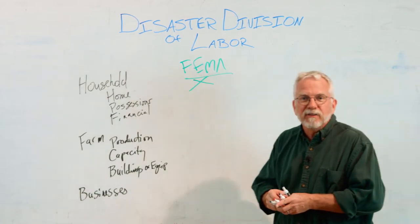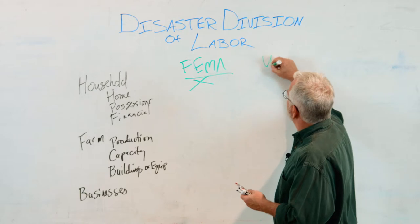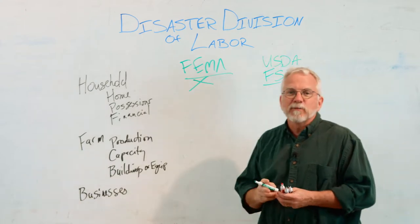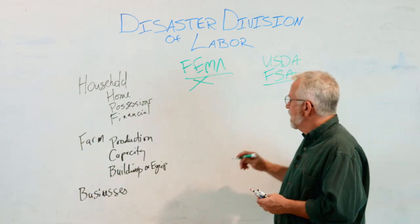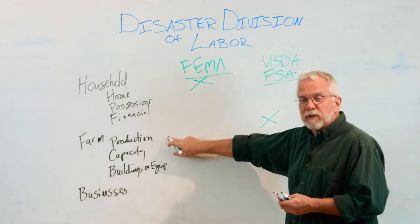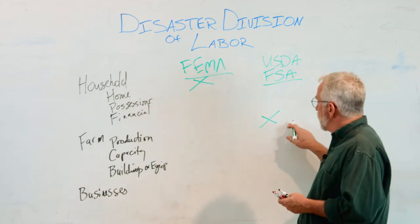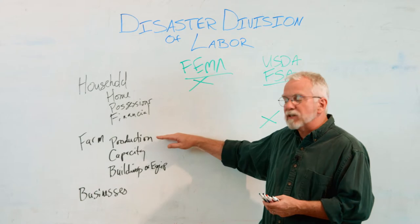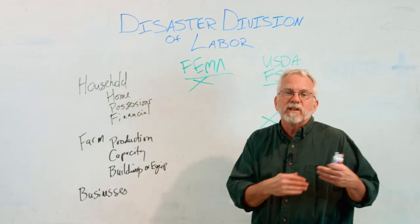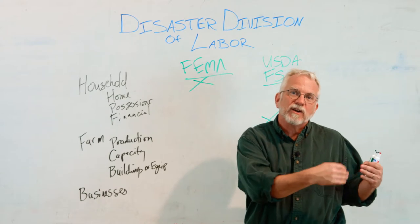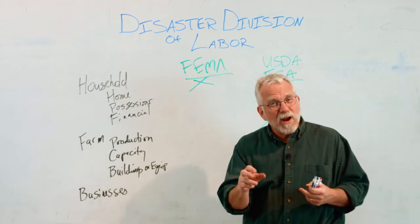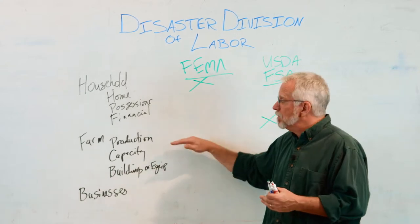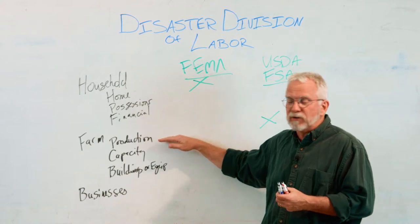The second major agency is the USDA Farm Service Agency, or the FSA. FSA is only going to deal with farm issues — that can be production capacity and buildings and equipment. Disaster assistance for production losses is generally dealt with through risk management programs like crop insurance or the Non-Insured Crop Disaster Assistance Program (NAP). There's very rarely funding made available after the fact for production losses; those are generally seen to be covered by crop insurance or NAP.